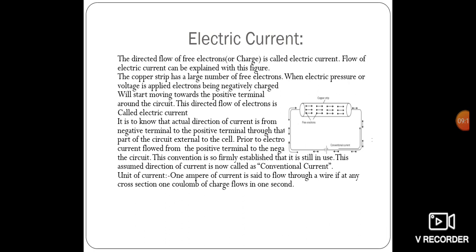The actual direction of current is from the negative terminal to the positive terminal through the external circuit. However, prior to the electron theory, current was understood to flow from the positive terminal to the negative terminal. This convention was so firmly established by scientists that it is still in use today, and is called conventional current.